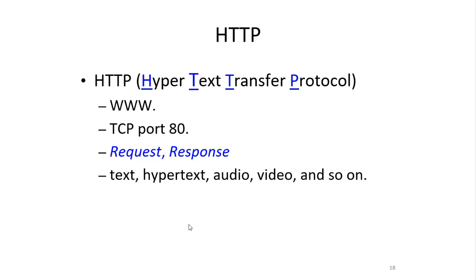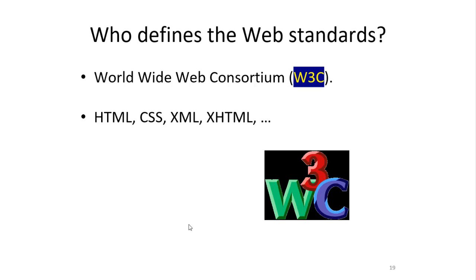HTTP, Hypertext Transfer Protocol, is the 3W protocol used to access data on the World Wide Web. It uses one TCP connection on port 80. There are two types of HTTP messages: request and response. Data is transferred in the form of plain text, hypertext, audio, video, and so on.